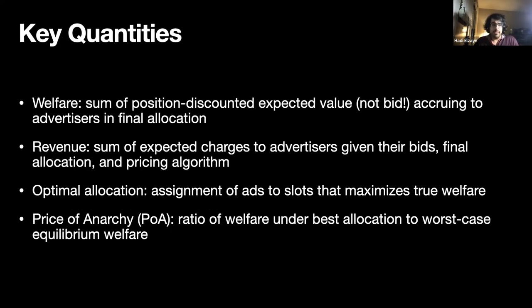Just as a reminder of key quantities: welfare is the sum of position-discounted expected value accruing to advertisers — importantly this is the value, not the bid, so the auctioneer does not directly observe welfare. Revenue is the sum of expected charges to advertisers given their bids. The optimal allocation is the assignment of ads to slots that maximizes the true welfare, which is also not directly observable by the auctioneer. And the price of anarchy is the ratio of welfare under the best allocation to the equilibrium welfare in the worst equilibrium.